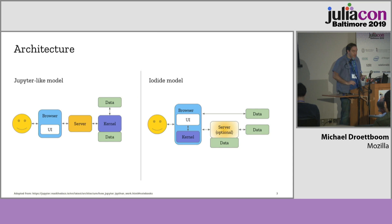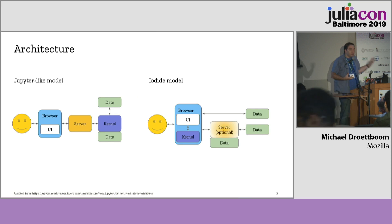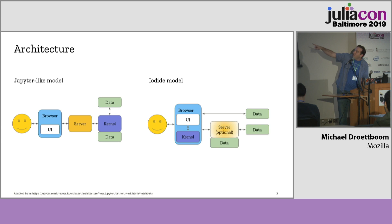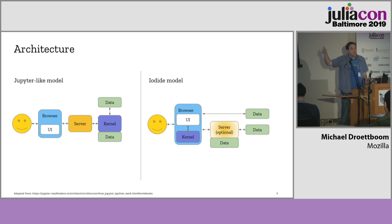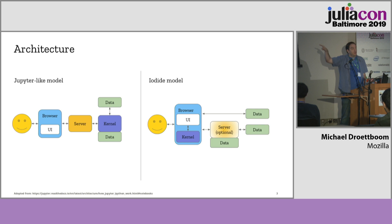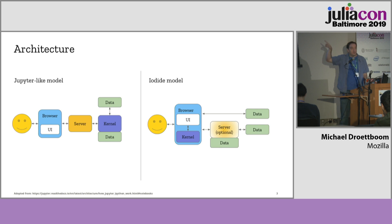Basically the gist of it is we're doing data science in a different way. The traditional Jupyter-like model on the left: you have a browser and you do most of your computation in a kernel that is remote to the browser. In the Iodide model, we're actually putting the kernel in the browser, so we're doing all the computation locally. It means you don't need a very complex server, you don't need cloud resources, and things distribute in a different way.